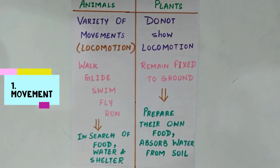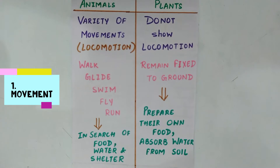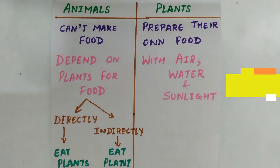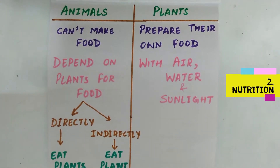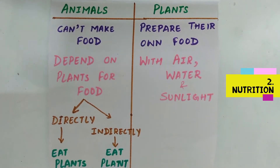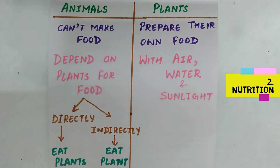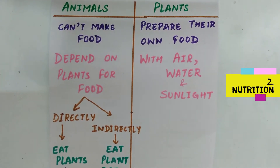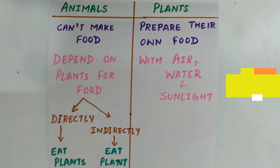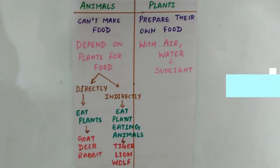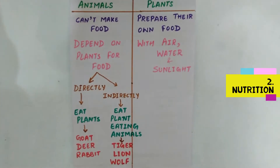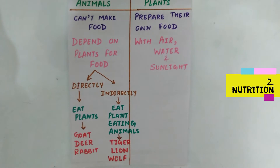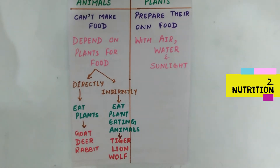Plants prepare their own food and absorb water from soil. Animals cannot make food — they depend on plants for food, either directly or indirectly.